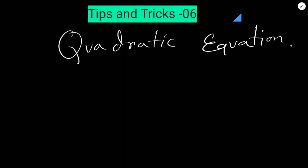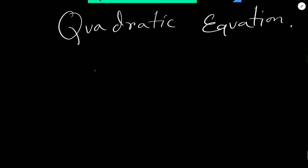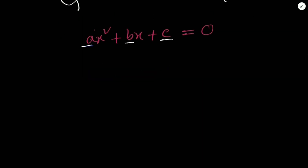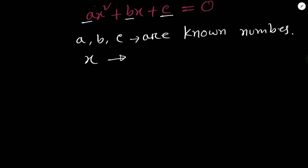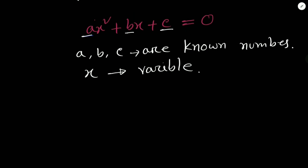First of all, what is a quadratic equation? A quadratic equation is an equation that can be written as ax² + bx + c = 0, where a, b, and c are constants — they can be any numbers: 1, 2, 5, negative values, whatever. So a, b, and c are known numbers, or you can say constants, and x is the variable.